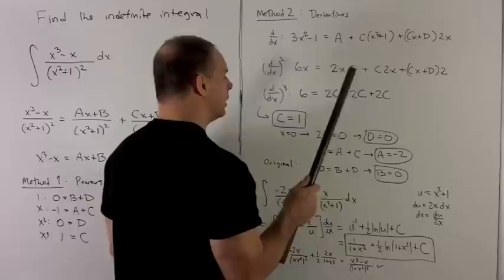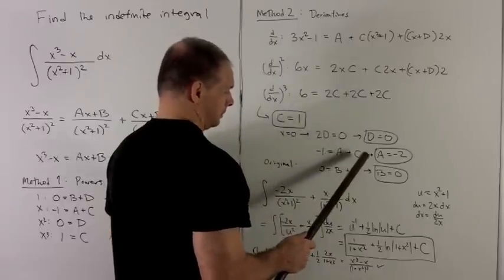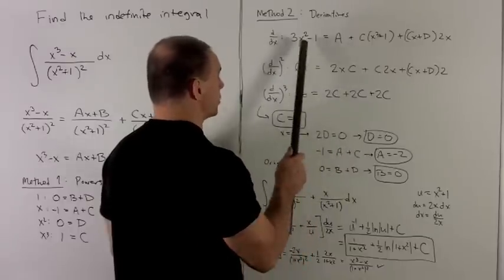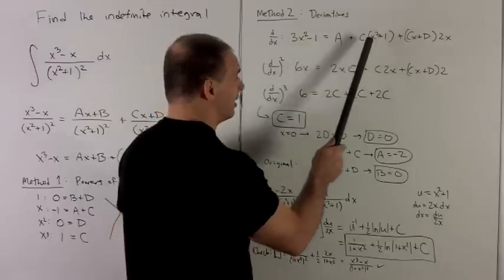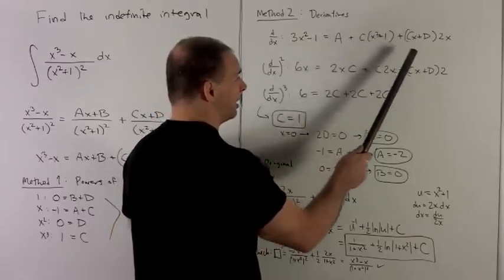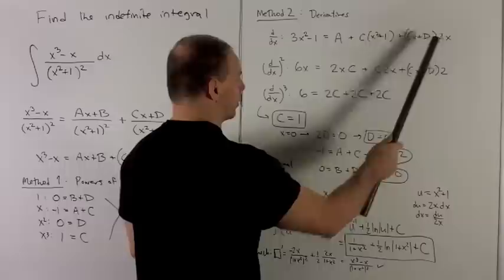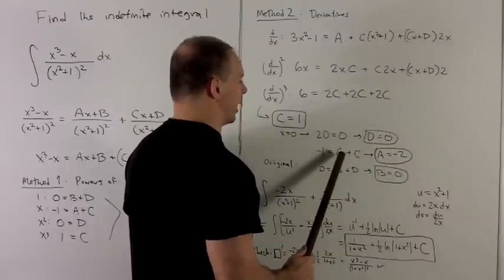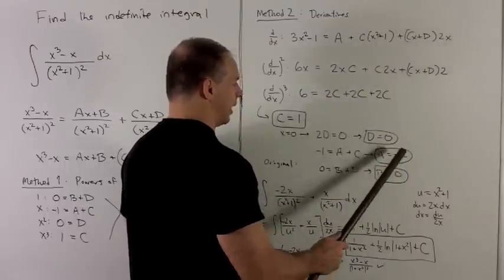In the top term, I can put, let's see, we're going to use 0 also, so I'll get a minus 1. That's going to go to 1 times c. That's going to go to 0, so that goes away. So we have minus 1 equals a plus c. That gives me a equal to minus 2.